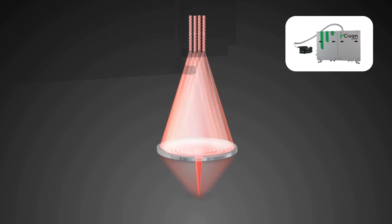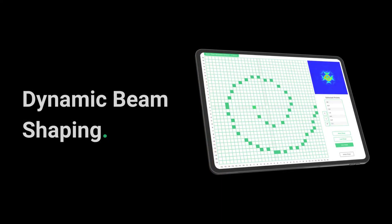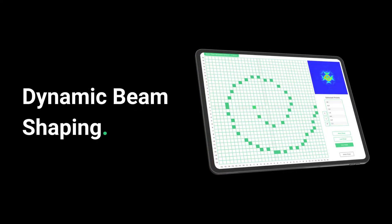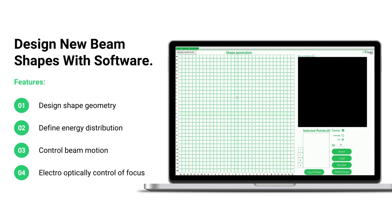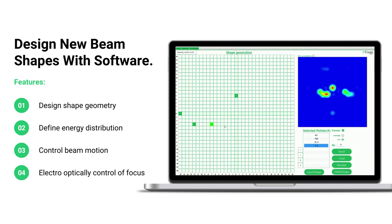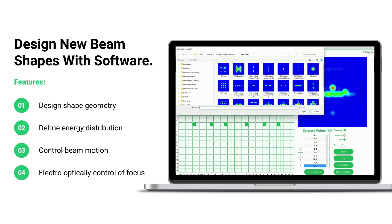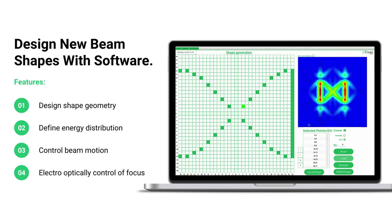Generating new beam shapes with the Dynamic Beam Laser is easy and done with a simple software. Through the software, one can control the geometry of the beam shape, the density at each point, and the order in which the shape is generated, all to optimize the light-material interaction.